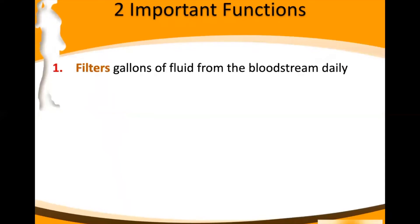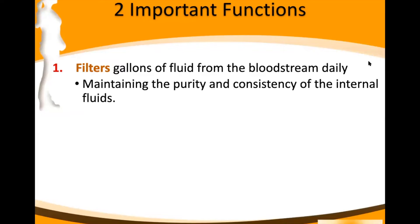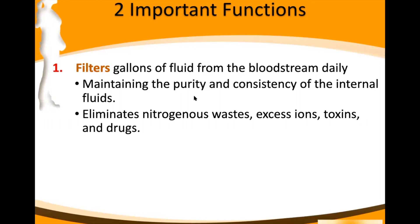There are a number of functions, but related to today's lecture we're really only going to cover two. The first is filtering the fluid of the blood — we filter gallons of fluid from the bloodstream daily. About 25% of the cardiac output goes straight to the kidneys for filtering, which allows us to maintain the purity and consistency of the internal fluids. Think of osmosis — consistency meaning concentration is really important for moving fluids between compartments like your tissues and your bloodstream.